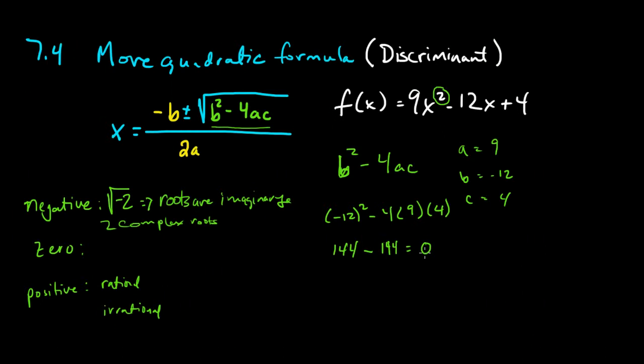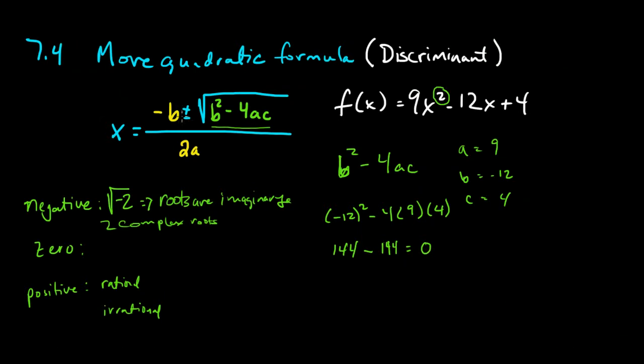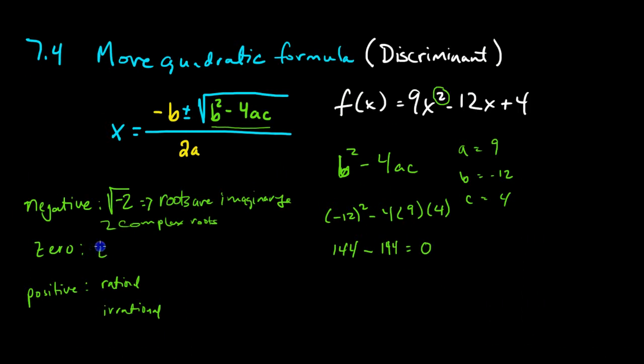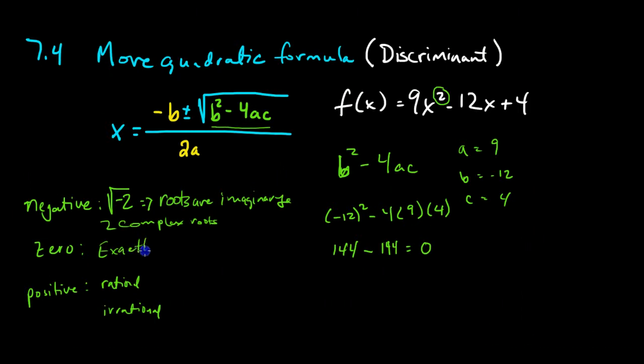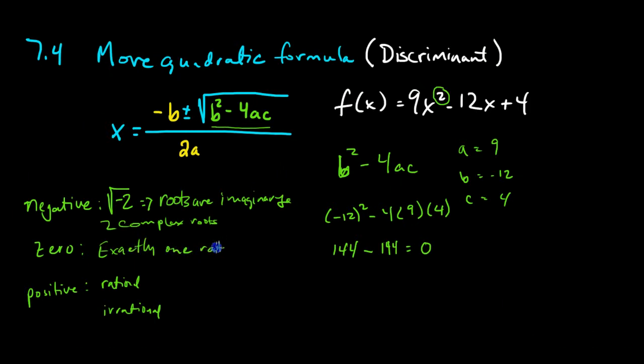Now in this case, our discriminant is 0, which means that whatever number my b is, I don't have to add or subtract anything to it, just divide by 2a. This means that we're going to have exactly one root.